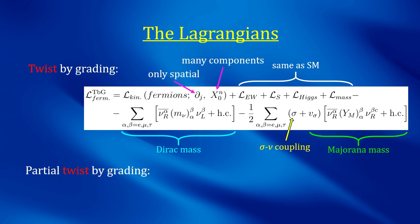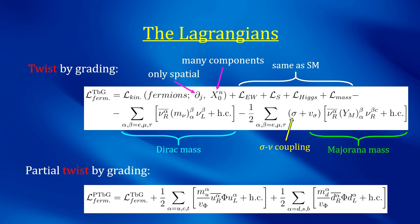And then, this is the Lagrangian in the partial twist-by-grading case. It is exactly the same as in the twist-by-grading case, plus the new terms containing the color-octet scalar phi, which has Yukawa-like couplings with the quarks. These terms are quite interesting, since the couplings are the same as the Higgs boson, divided by the unknown scale V phi.